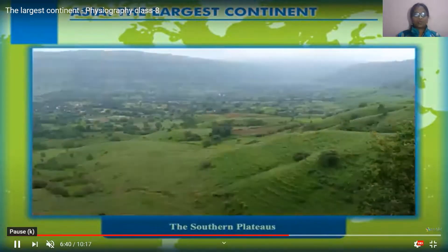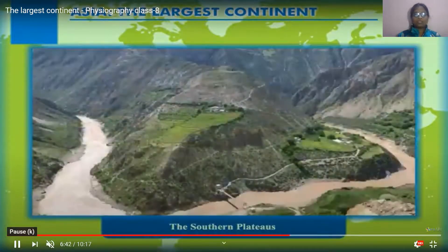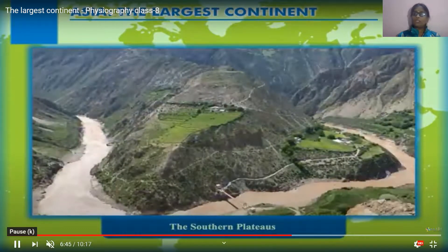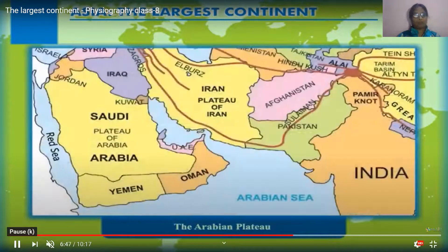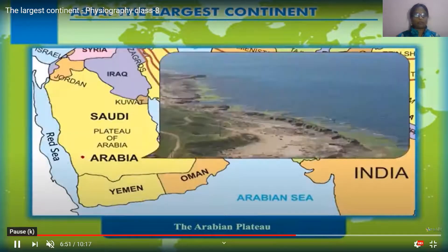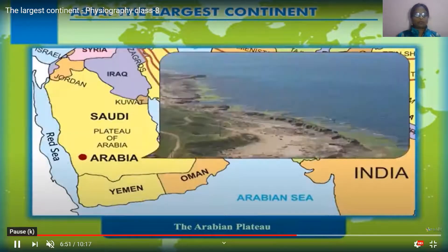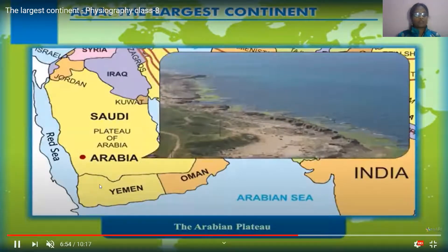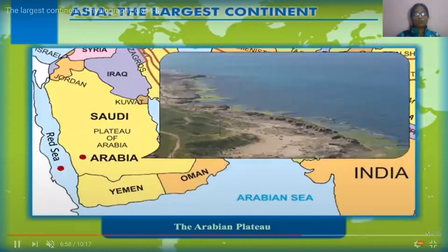Next one is the Deccan plateau. The southern side of India is covered by the Deccan plateau. In this image you are able to see the Iranian plateau, which also has two major deserts.